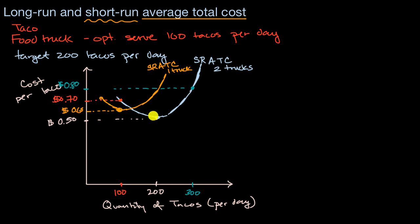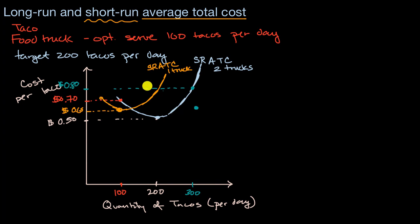Things could go the other way too. You might start with two trucks optimal for 200 tacos per day, but people want to buy 300 tacos per day, and 300 tacos with two trucks is not optimal. So in the long run, you order another truck — maybe it takes a couple of months — but once you get that third truck, you can optimally serve 300 tacos per day. You'd have another short-run average total cost curve with three trucks.